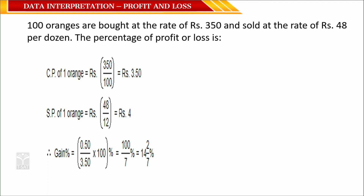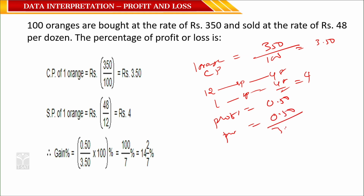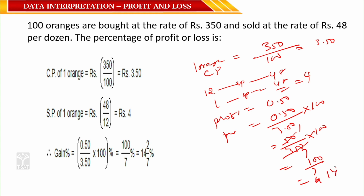Question 11: 100 oranges are bought at the rate of 350 rupees and sold at 48 rupees per dozen. What is the profit percentage? CP of 1 orange = 350 / 100 = 3 rupees 50 paisa. SP of 1 orange = 48 / 12 = 4 rupees. Profit = 4 − 3.50 = 50 paisa. Profit % = (50 / 350) × 100 = 100/7 ≈ 14 2/7 percent.